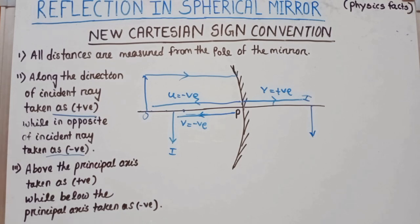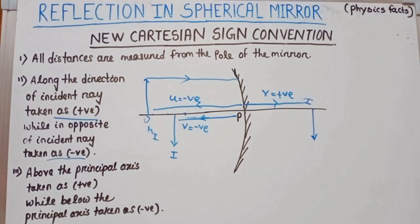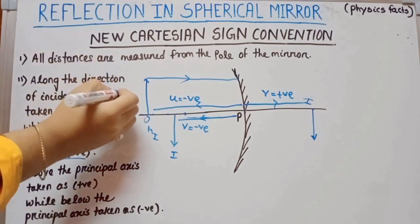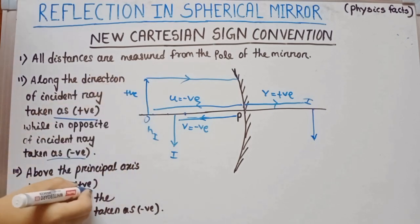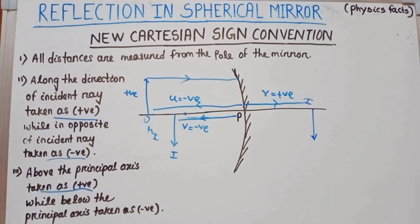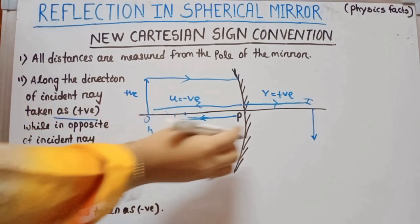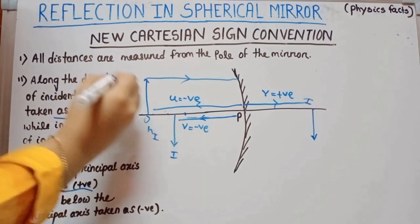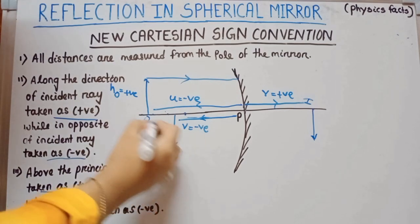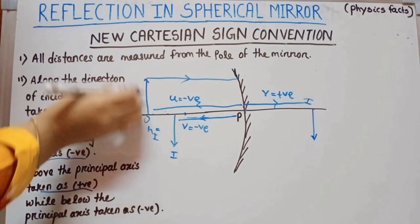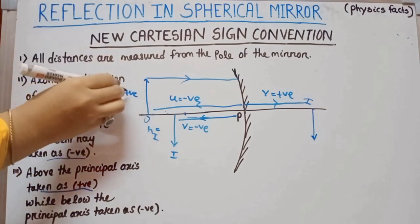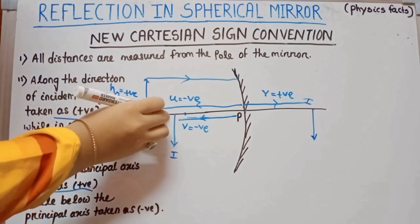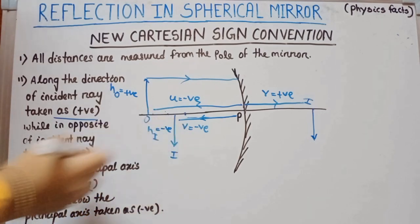The height measured above the principal axis is taken as positive, whereas the height measured below the principal axis is taken as negative. For example, object height HO is above the principal axis, so it is positive, and if image height HI is below the principal axis, it is taken as negative.